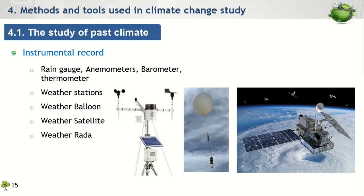From the previous slides, we have seen plenty of evidence that our climate system has indeed changed over the past century. So how did scientists discover climate conditions from 100 years ago? The study of climate change has been progressing over the past two centuries, and many tools and methodologies have been developed to explore climate conditions from the past, present, and future. There are several tools and methods commonly used to study past climate: the instrumental record, geological record, and proxy record.